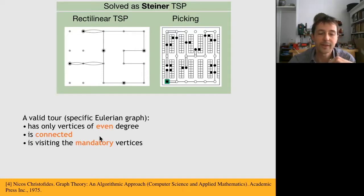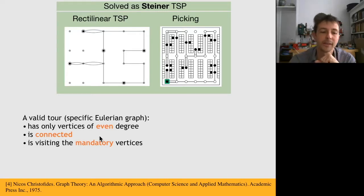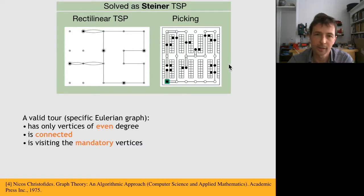The second point is that it must be connected — it must be made of a single connected component. And finally, it must visit the mandatory vertices, the cities or the products. This is the requirement of the Steiner TSP.